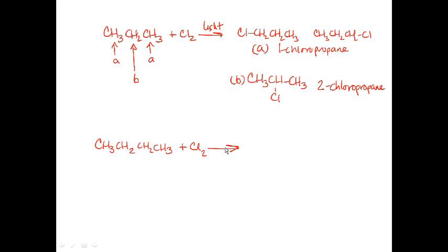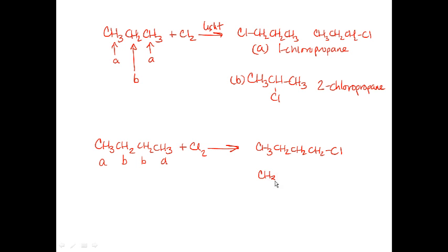Going back to confirm: if I replace any of the methyl group hydrogens, I get product A. If I replace any of the CH2 hydrogens, I get product B. So my two possible products are 1-chloropropane and 2-chloropropane — two possible products there.